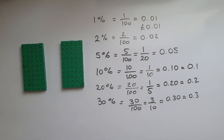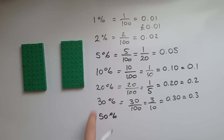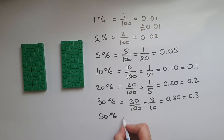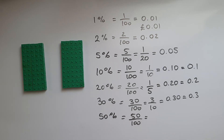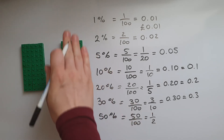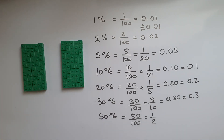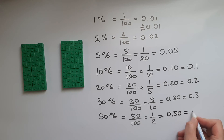50 percent is five times the 10 percent. It's 50 out of 100 and it's also one half, so there are two parts and we're taking one of them. That is 0.5 or 0.50 as a decimal.